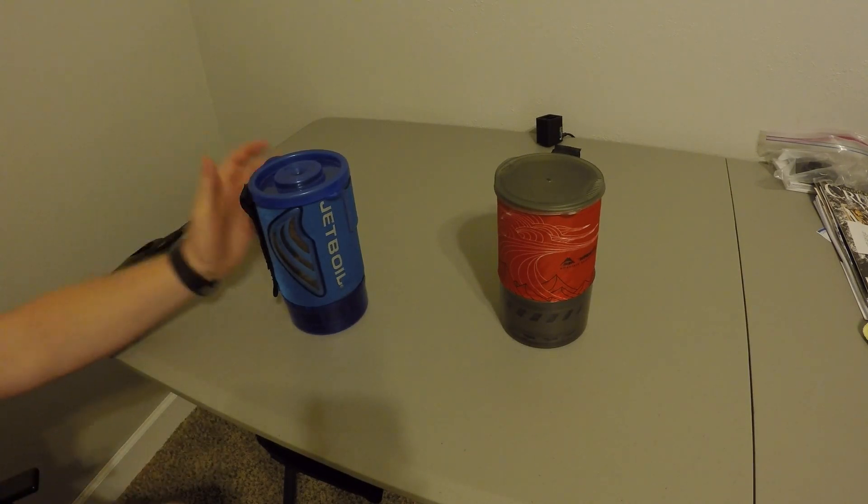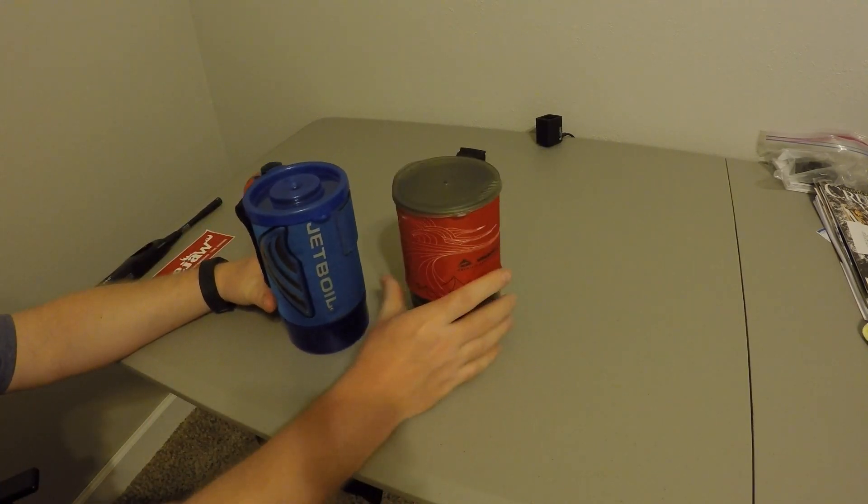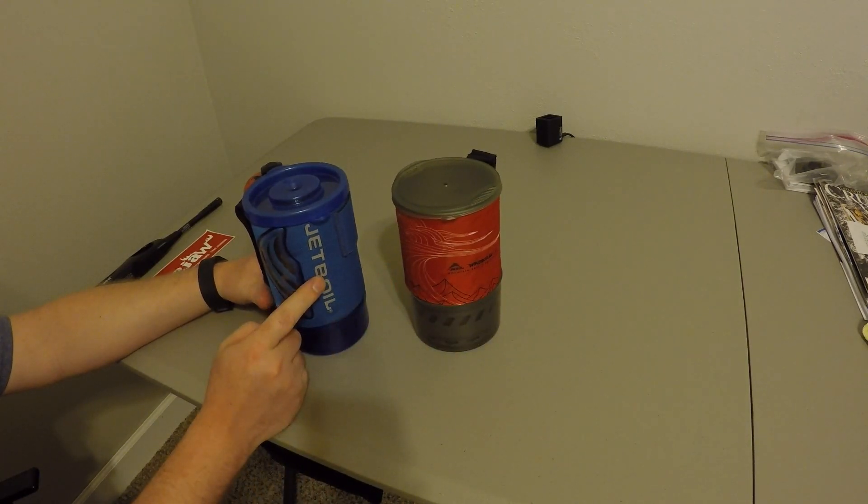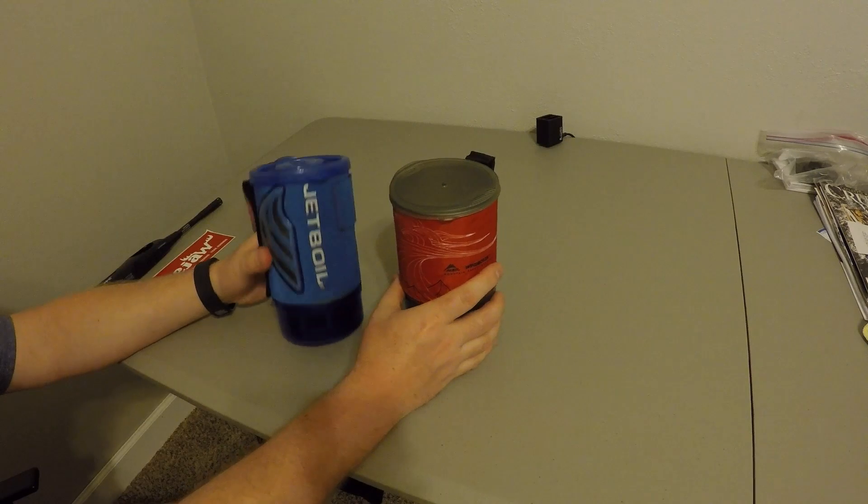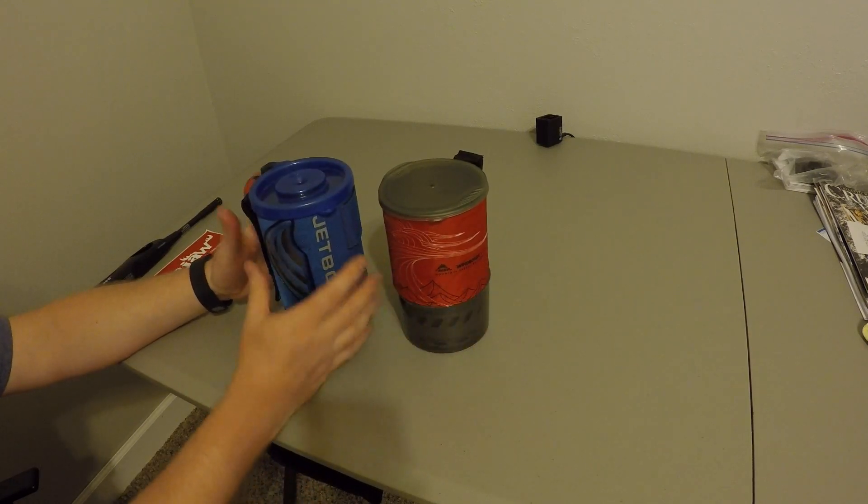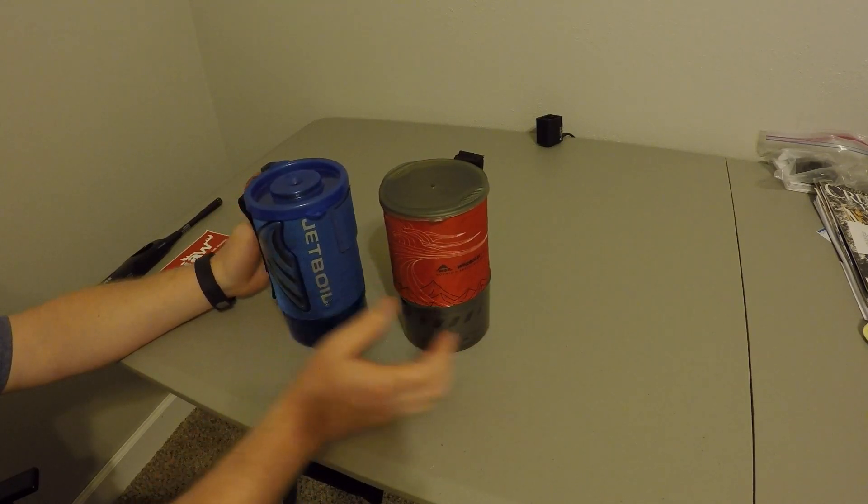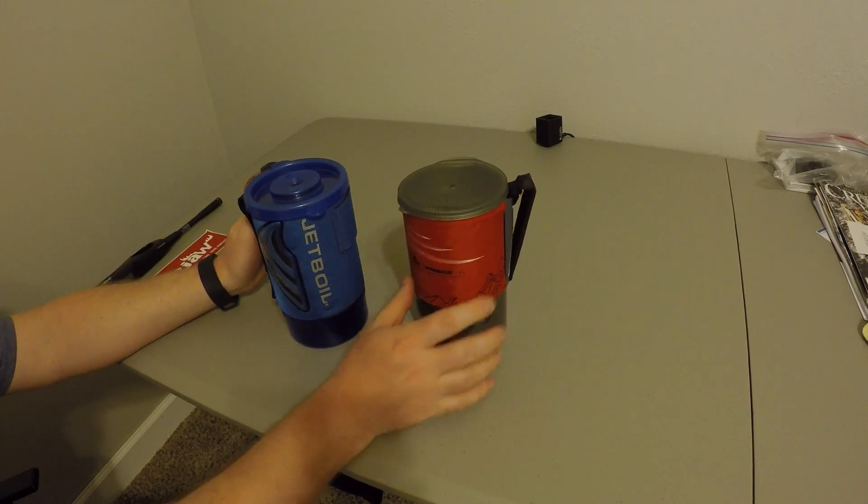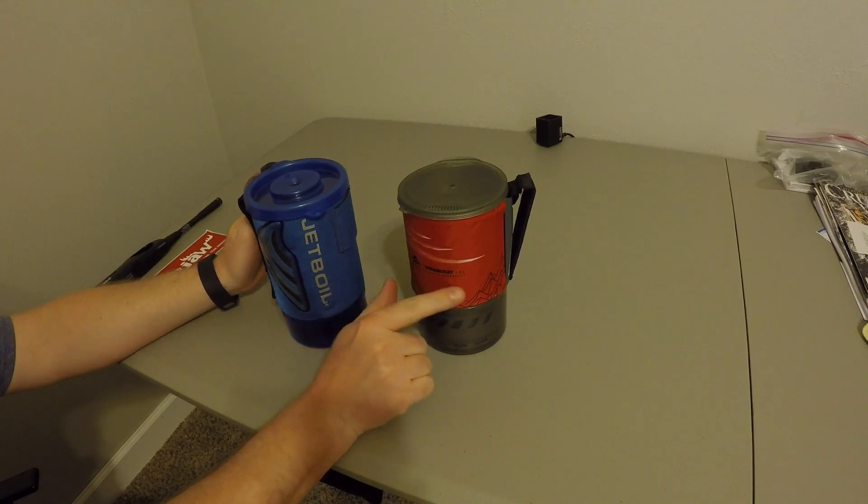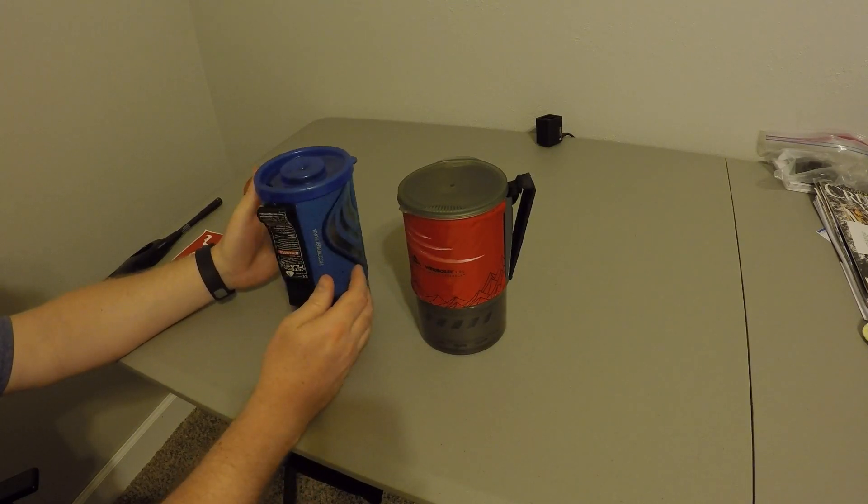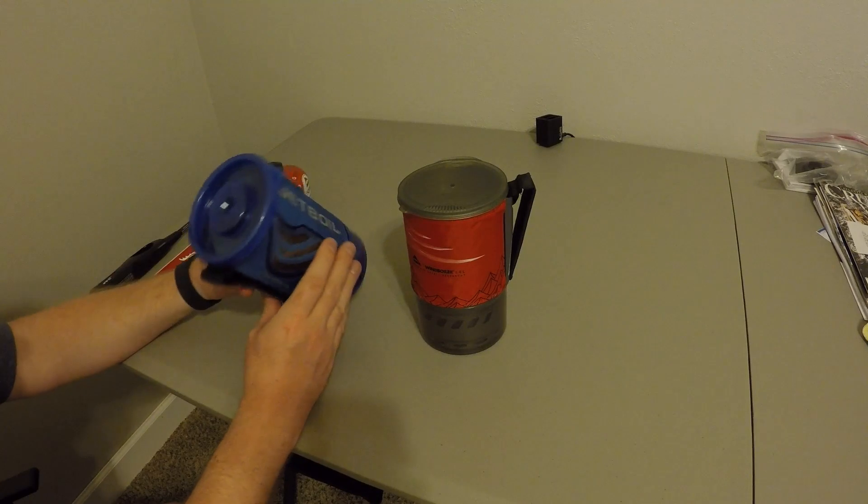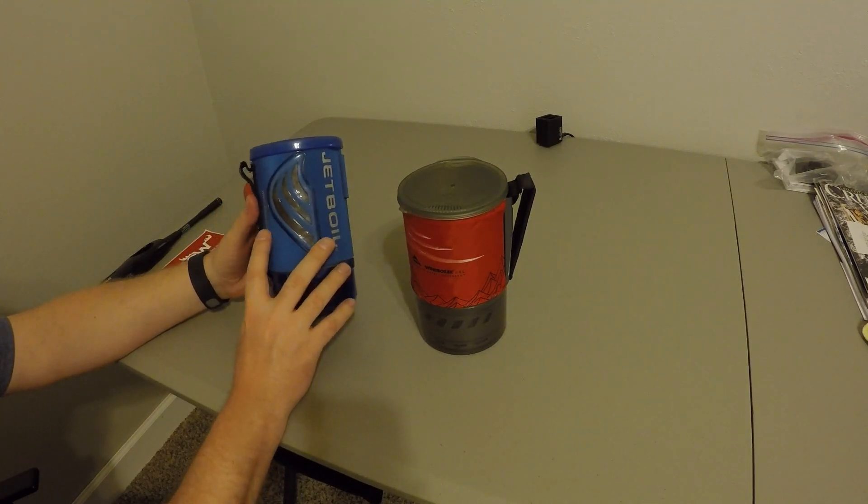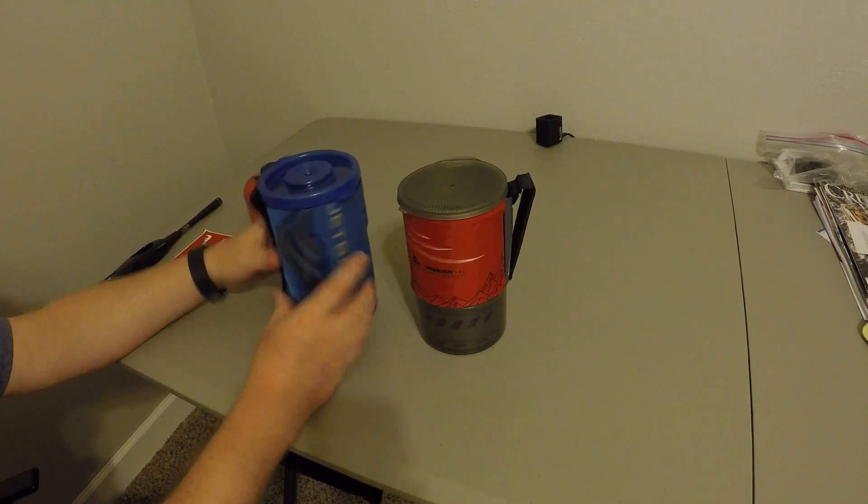Alright guys, here we go. So I told you I was going to compare the two pots, one is the MSR wind boiler, the other one is the Jetboil. Pots are very similar in size, this is the Jetboil Flash and this is the wind boiler, this is a 1 liter pot. And this is made by Mountain Safety Research. The Jetboil pot is a little over a liter, but it's made by Jetboil, which is a proprietary company.